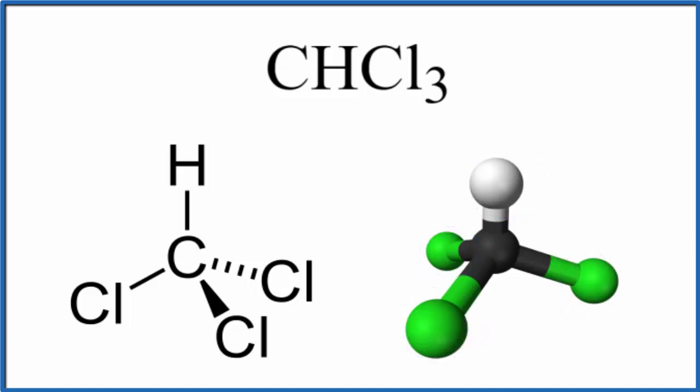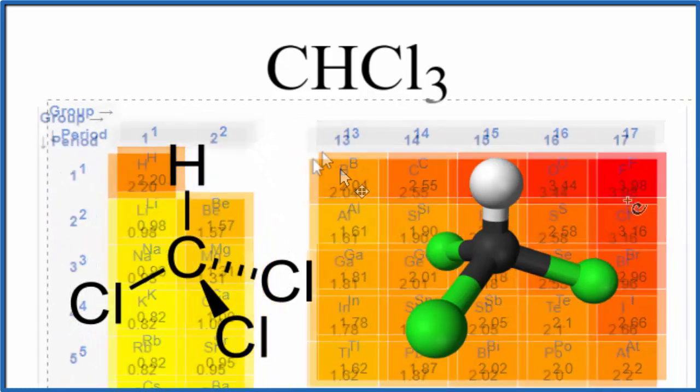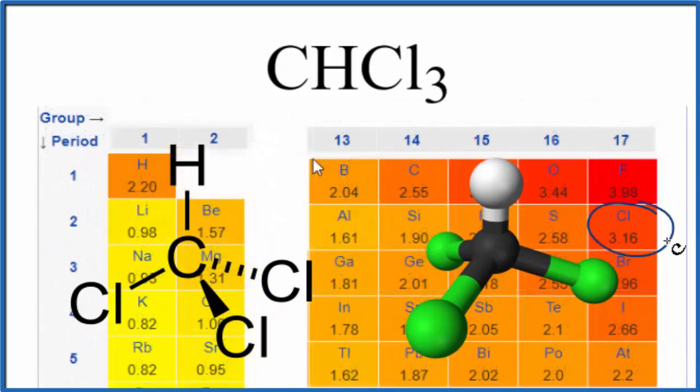To tell if it's polar, we can look at the differences in electronegativity. Chlorine here is the most electronegative of these three elements. There's our carbon and hydrogen. Carbon and hydrogen are pretty close. The chlorine is more electronegative.